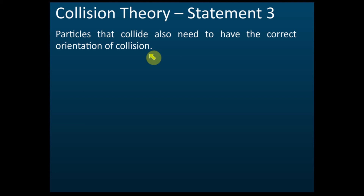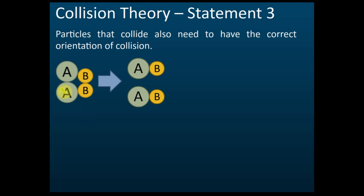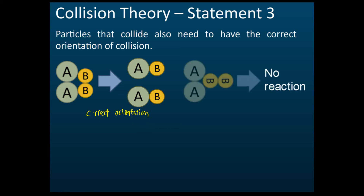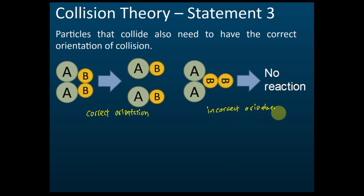Let me show you an example of orientation of collision. If A collides with B in a certain direction, the reaction can occur — that is the correct orientation. But if A collides with B in a different way with very high energy, even higher than the activation energy, there is still no reaction if the orientation of the collision is not correct. That is the wrong, incorrect orientation.